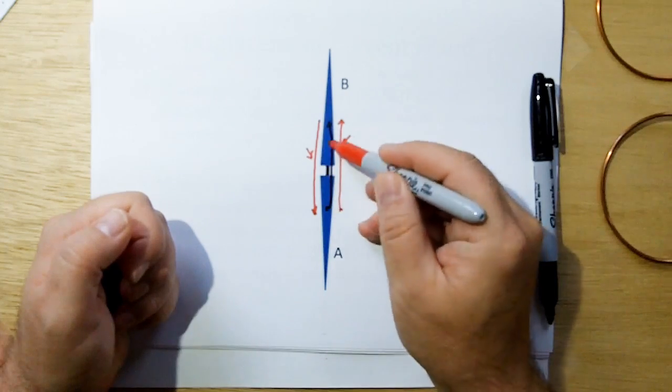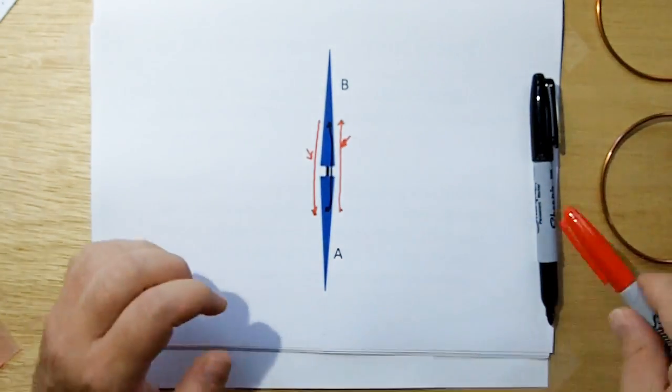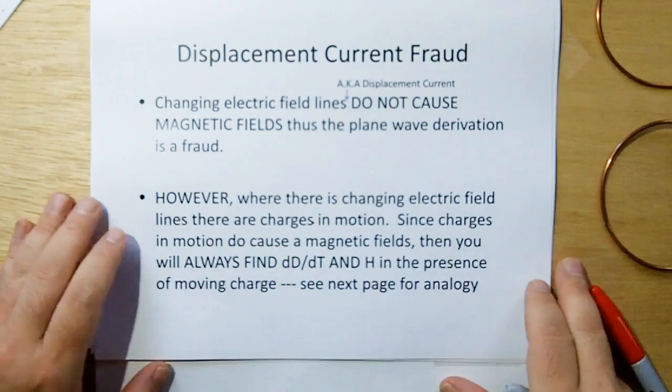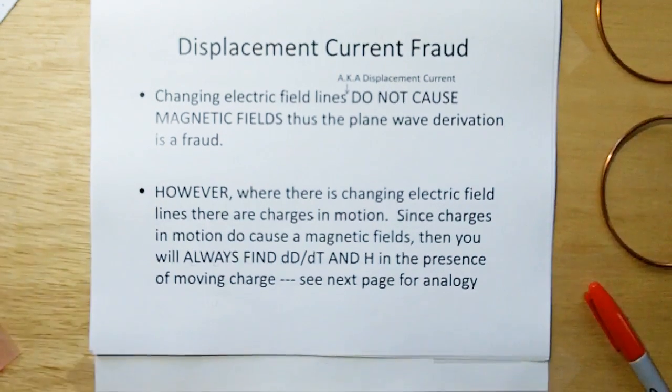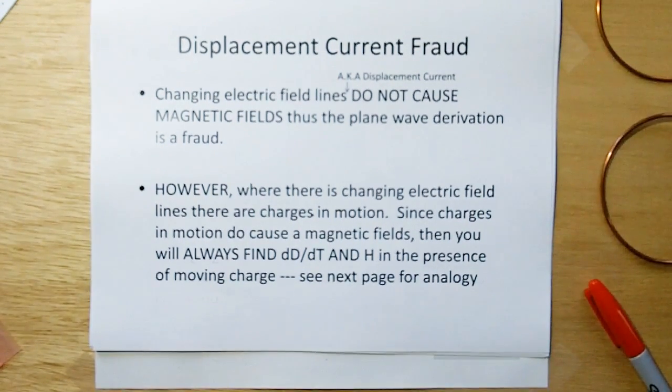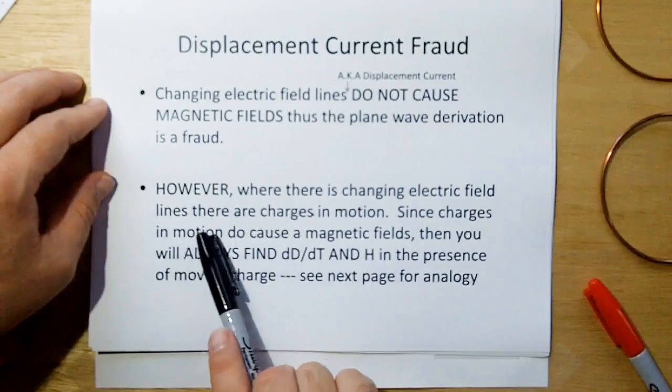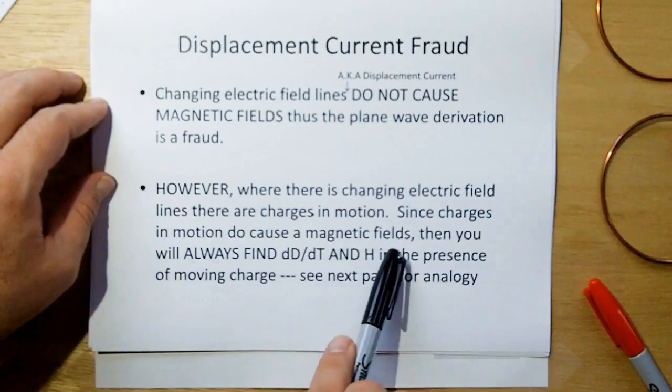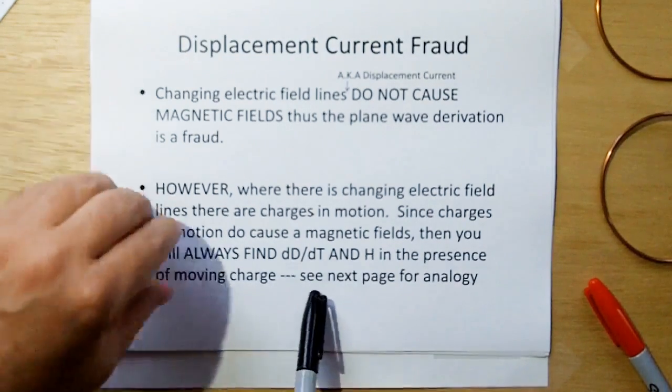Therefore, it's only the real current that causes the magnetic field, not the displacement current. Otherwise, a dipole would not radiate. So, the changing electric field lines, a.k.a. the displacement current, does not cause a magnetic field. Therefore, the plane wave derivation that we've relied on as the true model of light is a fraud. However, where there is a changing electric field lines, there are charges in motion. And since charges in motion do cause magnetic fields, then you will always find a changing electric field, and H, in the presence of a moving charge.